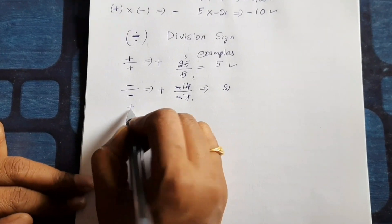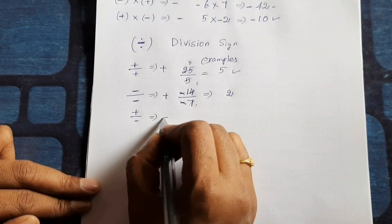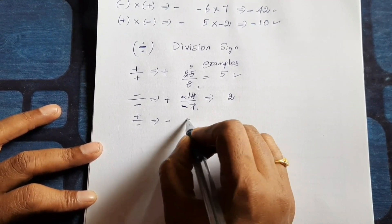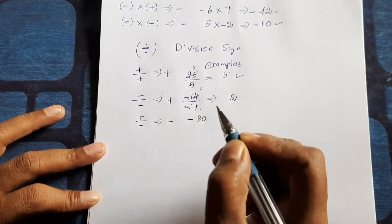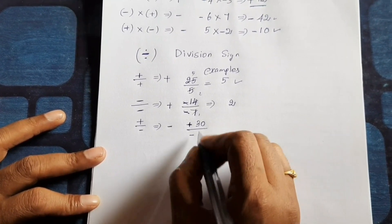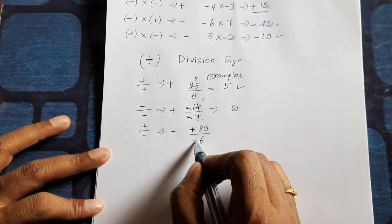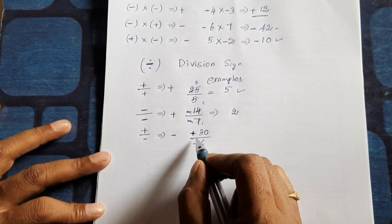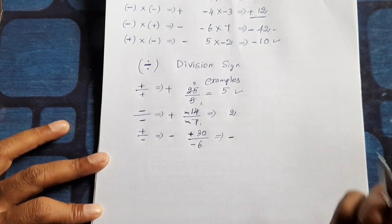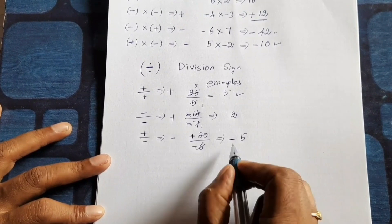Next, plus divided by minus. It gives negative sign. For example, plus 30 divided by minus 6. So denominator, numerator, any places, negative signs, that is common signs, common minus. 1, 6 or 5, 6 or, so negative 5.